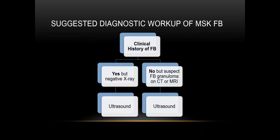Here is a decision tree for working up musculoskeletal foreign bodies. If there is a clinical history of foreign body but the x-ray is negative, consider ultrasound. If there is no clinical history of foreign body but a foreign body granuloma is suspected on CT or MRI and the foreign body cannot be confirmed, again consider ultrasound. All roads tend to lead to ultrasound — rely on it if all else fails for diagnosis on other modalities.